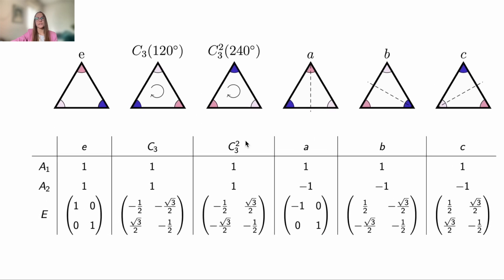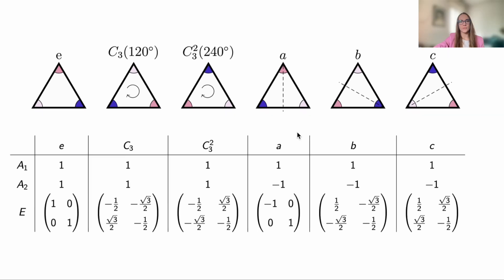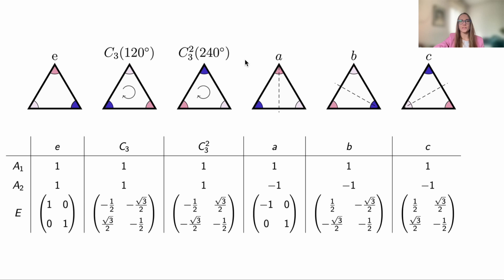It turns out that in the symmetry group of the triangle there are only three distinct ways in which any set of basis functions can transform. Specifically, let's write down the transformation matrices for all three cases. Each row here lists six matrices corresponding to the six elements of the group. The first row corresponds to how the function sine 3 phi behaves assuming this particular orientation of the triangle. The second row corresponds to how cosine 3 phi behaves.